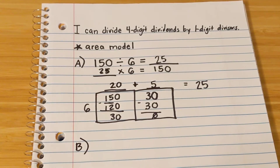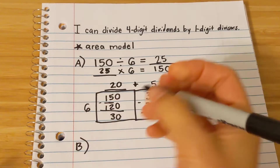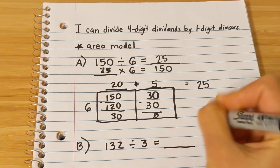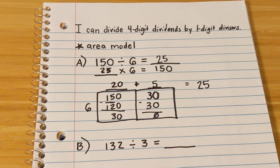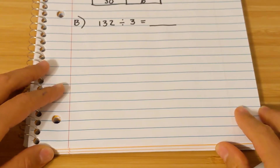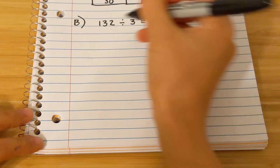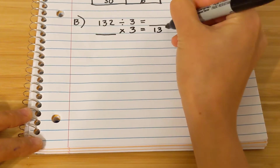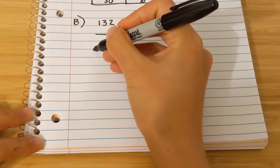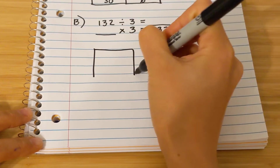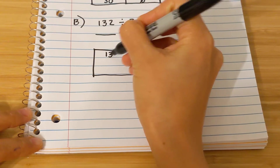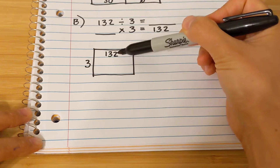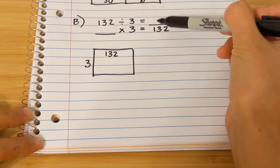Let's do another three-digit one — the last one will be a four-digit one. So 132 divided by 3 equals something. Dividend, divisor, and your something is your quotient. We're going to rewrite this as a multiplication problem: something times 3 equals 132. Draw your area — just a box. 132 goes in the middle, 3 goes off to the side, and the number up top is your factor to equal 132, which is also your first partial quotient.